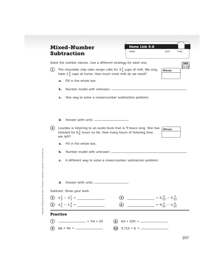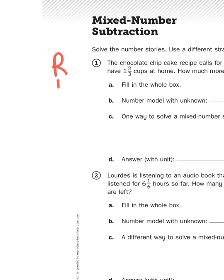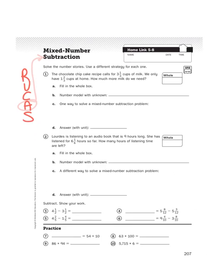If you take a look at this first problem here, it says solve the number stories, use a different strategy for each one. The chocolate chip cake recipe calls for three and a third cups of milk. We only have one and two thirds cups at home. How much more milk do we need? This number story is requiring us to subtract some mixed numbers. Before we dive into that, let's utilize our friend Ruckus to help us focus in on what we need to do. We're going to reread this problem, and as we do, we're going to underline the question, circle the important information, and come up with an action plan. Spoiler alert, we're going to be doing some subtracting.